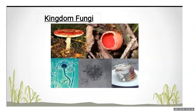Kingdom Fungi — in everyday life we see mushrooms as common examples. In this kingdom, we see only the fungus. They are called heterotrophs because they do not have chlorophyll, so they cannot perform photosynthesis.